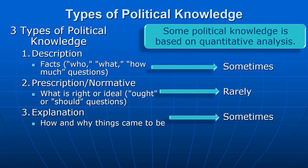Moreover, when we talk about prescriptive or normative knowledge, it's rarely the case that prescriptive or normative claims are based on quantitative analysis. We can make some kind of argument that what's good for the most people is what ought to be right, but that's really just a moral argument. There's not really a quantitative basis for saying that — it's just choosing a criterion of what's good for the most people. The underlying question about whether that is a valid principle on which to operate — that's a moral question. That extends out of a moral theory or a notion of the public good. That's not really a quantitatively oriented question.